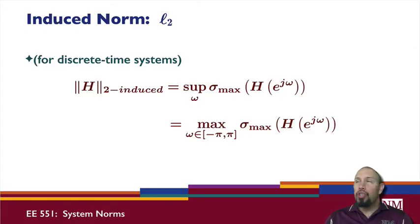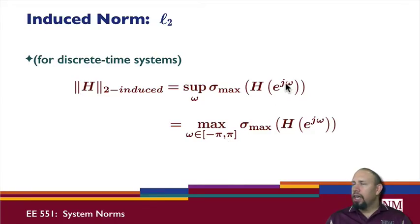Now if we look at the induced l2 norm in discrete time, for discrete time systems the l2 induced norm can be shown to be given by this expression. Instead of the supremum over all omega, where omega is from minus infinity to infinity, we can actually restrict our attention because omega appears in the exponent. This exponent has unique values only between π and minus π.